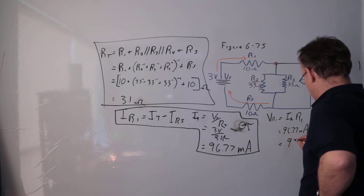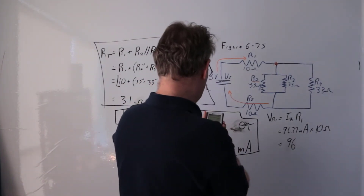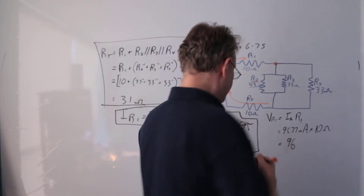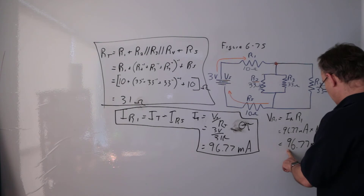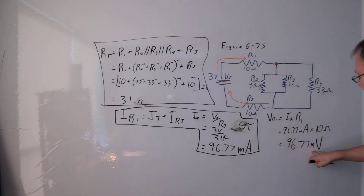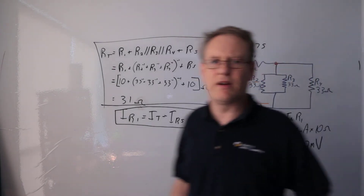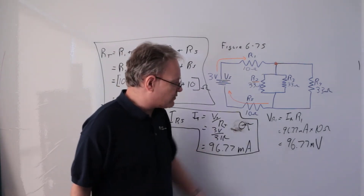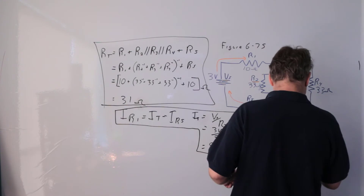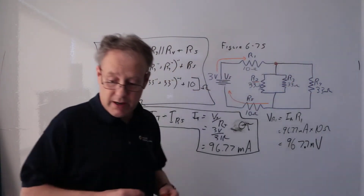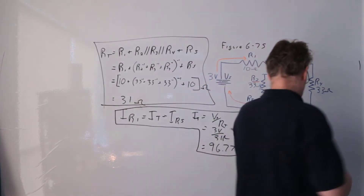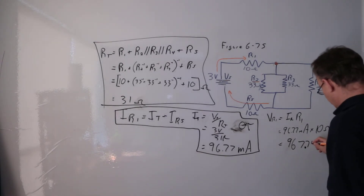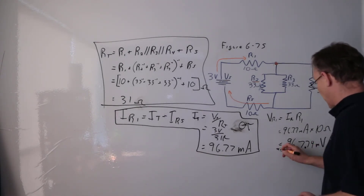That gives VR1 = 967.74 millivolts, which I'll write as 967.74 mV — keeping the milli prefix since I didn't change the decimal scaling. My calculator confirms: 96.77 mA × 10 = 967.74 mV, which rounds to 967.74 mV. Pay attention to your calculator output.